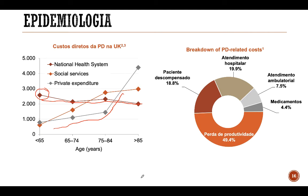Por volta dos 83 a 84 anos, a maior proporção dos custos são assumidos pela iniciativa privada. Podemos estratificar quais são os principais custos para o paciente com a doença de Parkinson: os medicamentos correspondem apenas a 4,4% dos custos. A maior parte dos custos é em virtude da perda de produtividade, com 49,4%. 7,5% referem-se ao atendimento ambulatorial, 19,4% aos custos relacionados ao atendimento hospitalar, e 18,8% às descompensações relativas à doença de Parkinson.